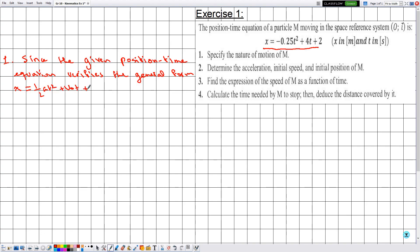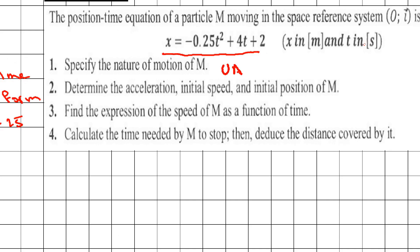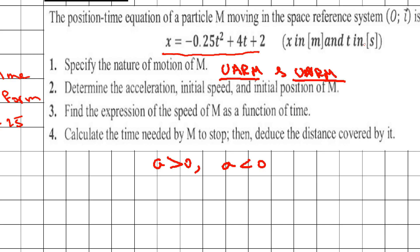Comparing with x = ½at² + v₀t + x₀, we find that ½a = -0.25. What distinguishes UARM from UDRM is the sign of the acceleration: if a is positive the motion is UARM, and if a is negative the motion is UDRM. Both cases are classified under UVRM.